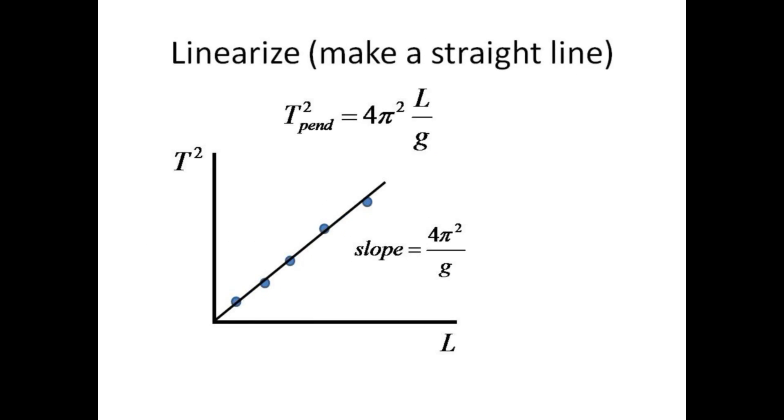If the law of the pendulum is squared, then the period squared is directly proportional to the length, and a plot of t squared versus l will yield a straight line with a slope that can be used to measure g.